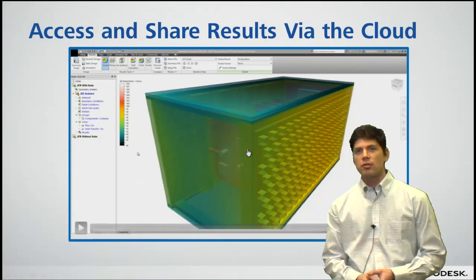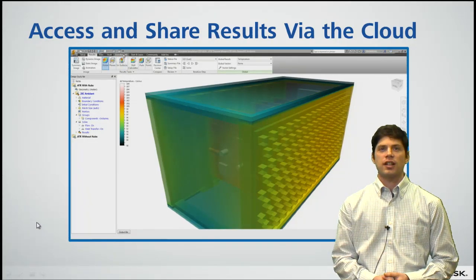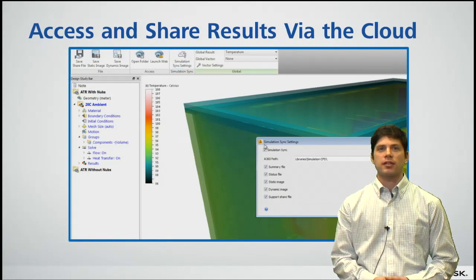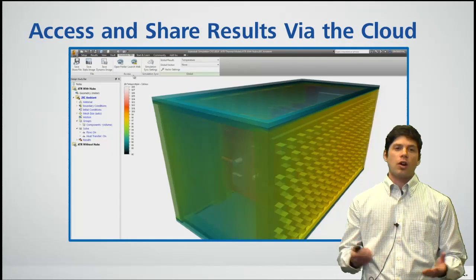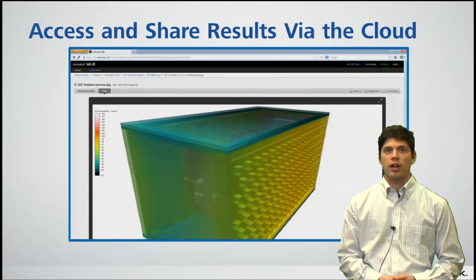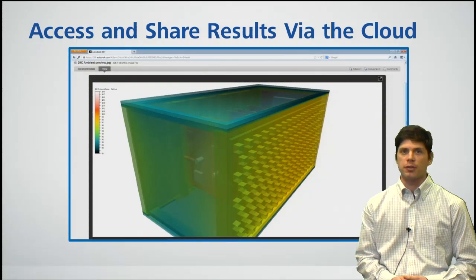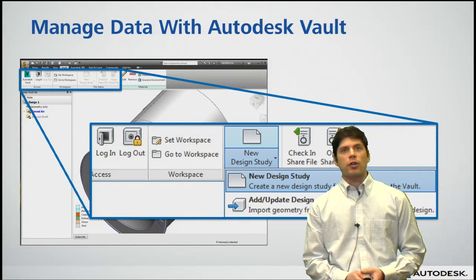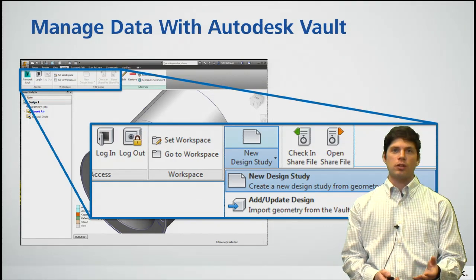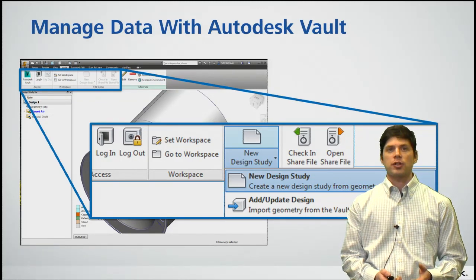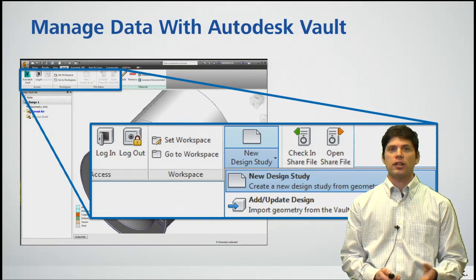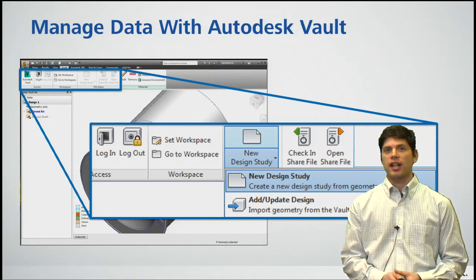Another thing that came out of conversations with customers is that too often data just resides on one machine and it's hard to share it across the entire design team. In 2014, we're allowing you to push lightweight copies of results data up to the cloud so you can access it no matter where you are, even away from the machine, and share it with others within your organization or clients outside your company firewall. For people using a PDM system like Autodesk Vault, we're also offering direct interoperability — you can pull CFD data from Vault, work on it, check it back in, and link it to geometry so you can understand when that simulation data may go out of date.